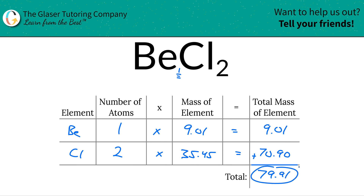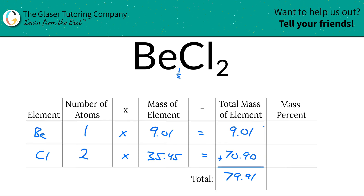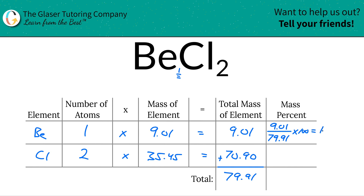That was the first part of solving for the percent composition — we had to find the total mass. It doesn't really matter if you use grams per mole or AMU; just leave out the units, the magnitude of the number is what's important. Now to calculate the mass percent of each element, I'll create a new column in the table. To find the mass percent, take the total mass of the element in the compound — 9.01 for beryllium — divide it by the total mass of the entire compound, 79.91, and multiply by 100. That's the simple percent formula: part over whole times 100. When we plug that in, it works out to approximately 11.28%. That is the percent for beryllium in beryllium chloride.